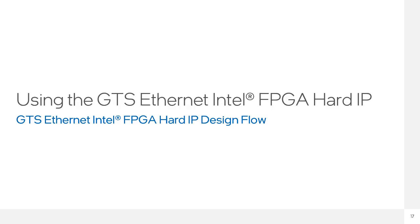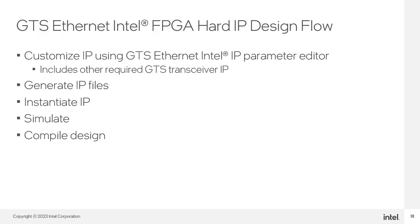Now that we have a better understanding of the GTS transceiver hardware when Ethernet is enabled, we will continue by looking at the design flow. The GTS Ethernet Hard IP design flow is the same as other Intel IP. First, customize the IP using the IP parameter editor, including configuring any other IP required by GTS transceivers. Next, generate the IP files and instantiate the IP in your design. You can then simulate the design using simulation models, and finally constrain and compile your design and review its implementation.